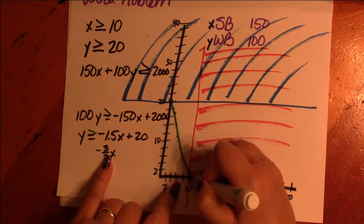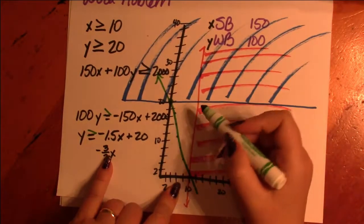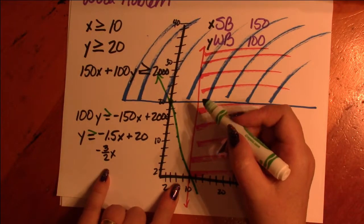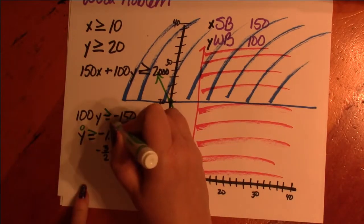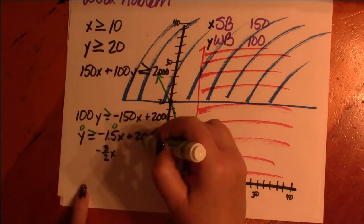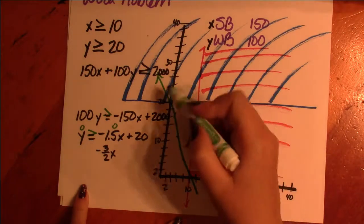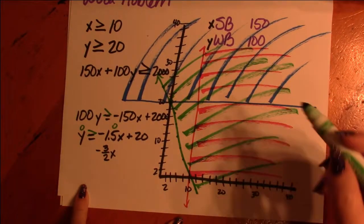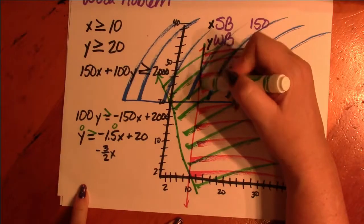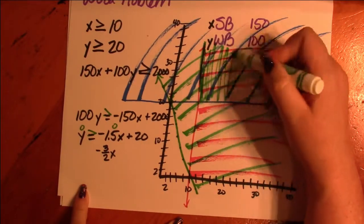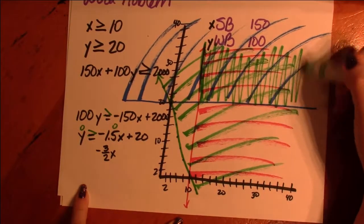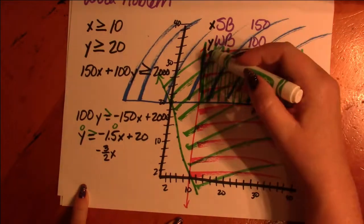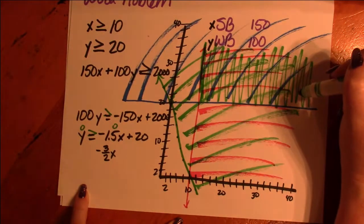So it does kind of make a little thing. And we're talking about 0, 0 is larger than 20. That's not true. So we're talking about this area here. So where they all meet is here. And so we are looking for something in this range.